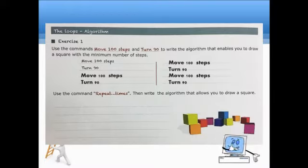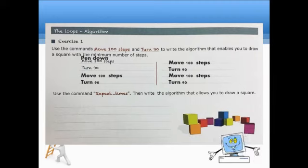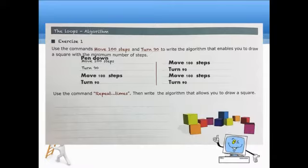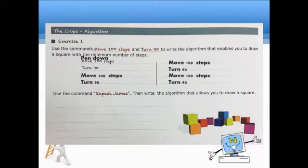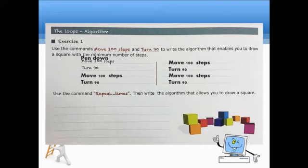So, now we have 8 steps. But still, these 8 steps will not allow you or will not enable you to draw a square. We still need one more step and that step is pen down. So, what's the use of this pen down? Pen down enables us to draw a line. So, after completing these 9 steps, using the commands move 100 steps and turn 90, then you can draw a square.